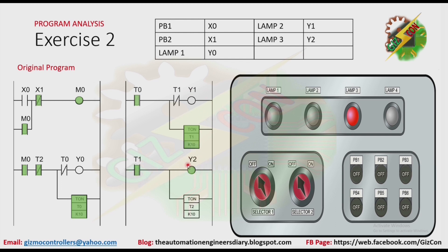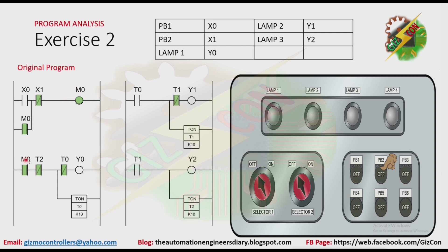That will make Y2 turn on, and T2 will be activated after 1 second. Because T2 is activated, the normally closed contact of T2 will be open, making timer T0, T1, and T2 turn off. Because all the timers are off, the normally closed contacts of all the timers go back to their initial state, and Y0 will turn on again — the cycle will just repeat. If we press PB2, it will energize X1, that will make M0 turn off. Because M0 turns off, the output will not energize anymore and the cycle will not repeat.